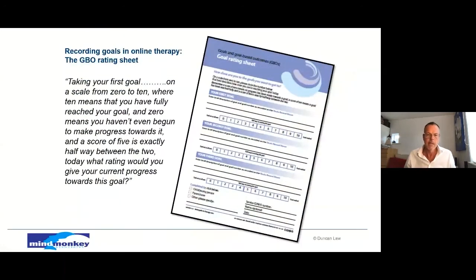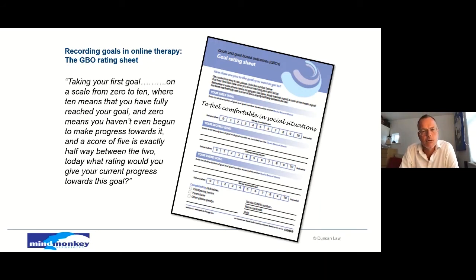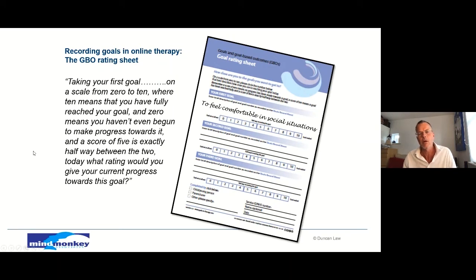It's easily used online. The guidance covers the sorts of things you might say. Once you have agreed a goal — which is a deceptively simple thing to say but an incredibly sophisticated thing to do clinically — you can say something like: 'So, taking your first goal, on a scale from zero to ten, where ten means that you've fully reached your goal and zero means you haven't even begun to make progress towards it, and a score of five is exactly halfway between the two — today, what rating would you give your current progress towards this goal?' You don't have to use that exact language — the important thing is it's a scale from naught to ten, ten is that you've fully reached your goal, zero is you've made no progress, and the anchor point of five is important as well.